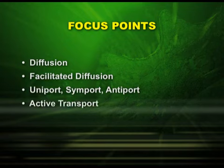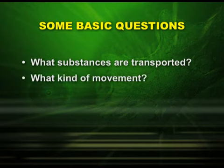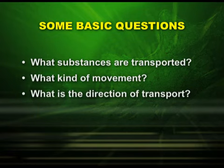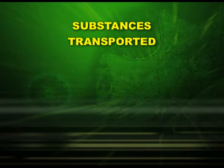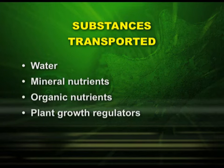Before we start our concept, let us ask some basic questions. What substances are transported? What kind of movement and what is the direction of transport? The substances transported are water, mineral nutrients, organic nutrients, and plant growth regulators. Movement is based on the distances, which are classified into short distances and long distances.